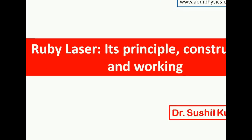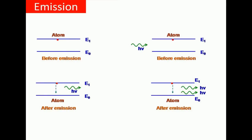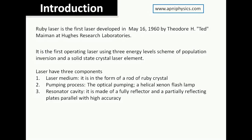In this video lecture I will discuss about the ruby laser — its principle, construction, and working. Before that I had discussed about the main components of the laser and the processes that take place simultaneously: absorption, spontaneous emission, and stimulated emission, and the Einstein coefficients. The ruby laser was the first laser, developed in 1960, using a three energy level scheme of population inversion, and a solid state crystal as the laser element.